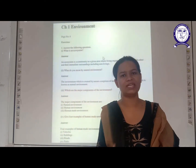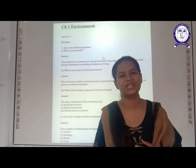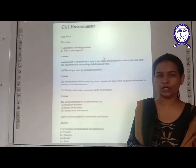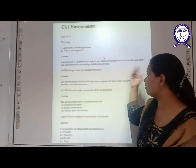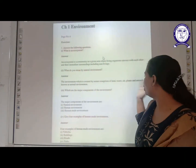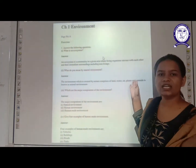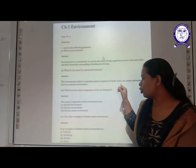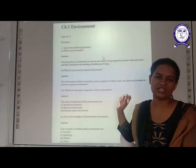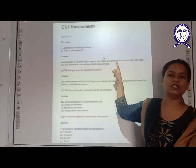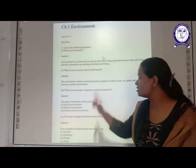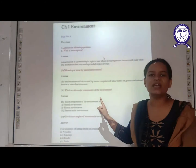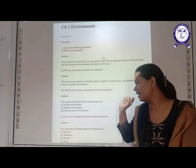Natural environment is the environment created by nature — for example, land, water, air, plants. The next question is: what are the major components of the environment? Remember the diagram — three major components: natural environment, human environment, and human-made environment. The next is: give five examples of human-made environment. Look around you — so many things are there that are present around you, and you can write the answer in your own words.